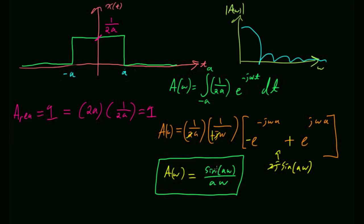Sine of A-omega over A-omega — this turns out we're going to see this all the time. This has a name: the sinc function. So this is called the sinc function, and we'll discuss it in a little bit more detail when the time is ripe.